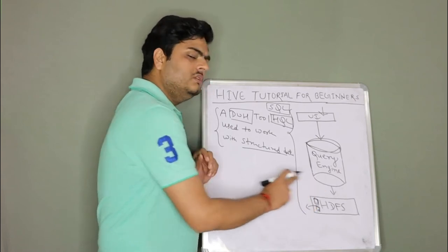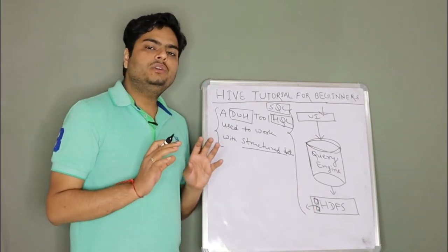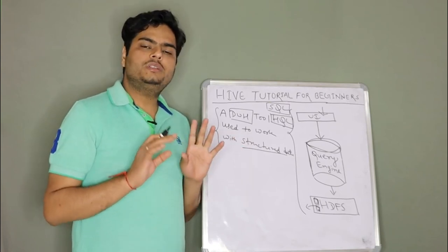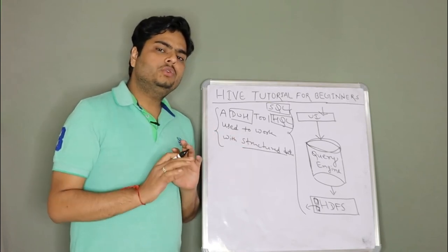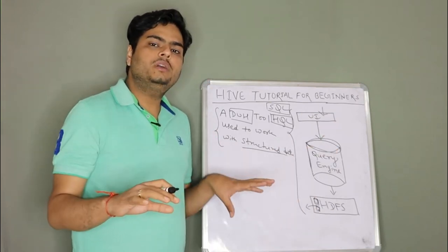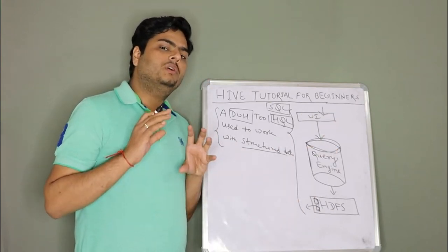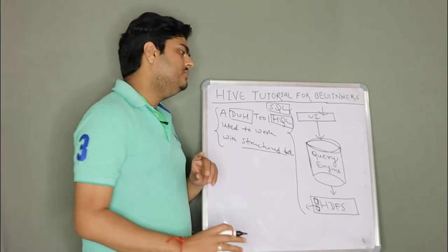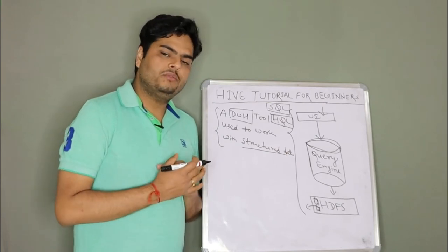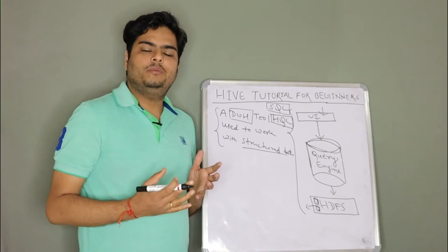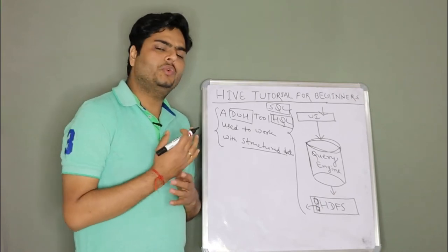Since it uses HDFS in the background, hence it can use the advantage of parallel computing. That is advantage number one. Advantage number two is it will be fast. Since it uses parallel computing, since it uses the power of Hadoop, hence it will be faster than a normal database if you store huge amounts of data like we store in Hive. Third is anybody can use it very nicely and easily because you need to write SQL-based queries.